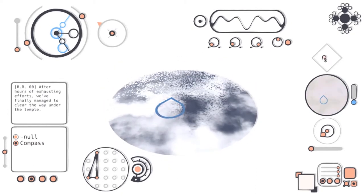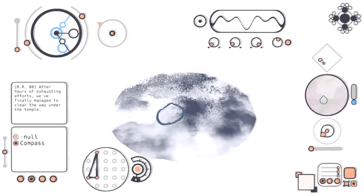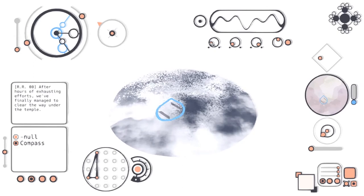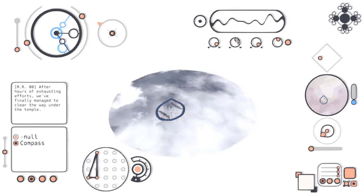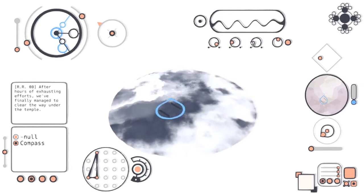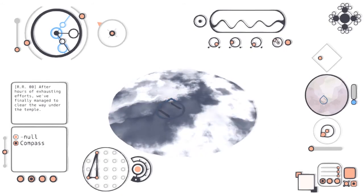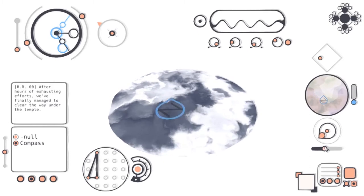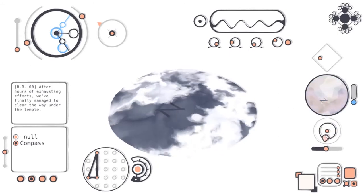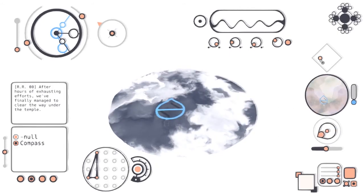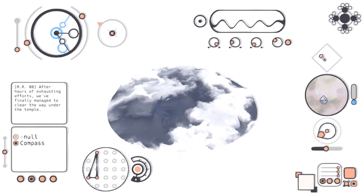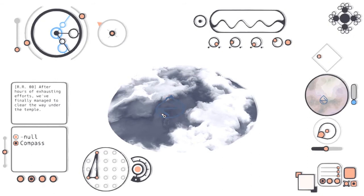So we have to fiddle with all the dials until we see something there. Sometimes if we fiddle with these, maybe if I make it a little bit flatter. Or maybe this one. Oh, we've got a line there. That's blue. That's good, right?